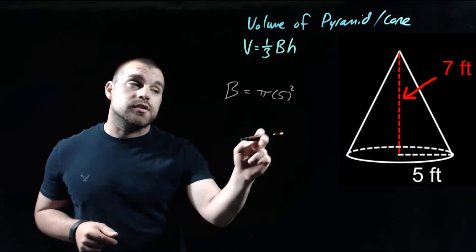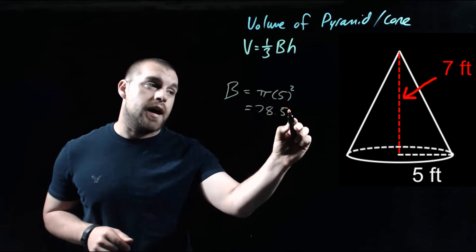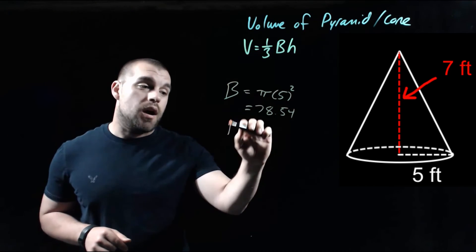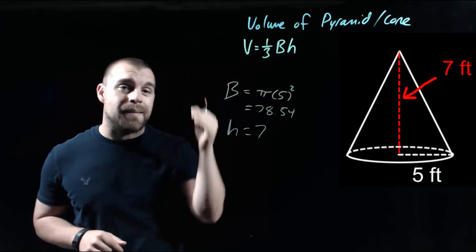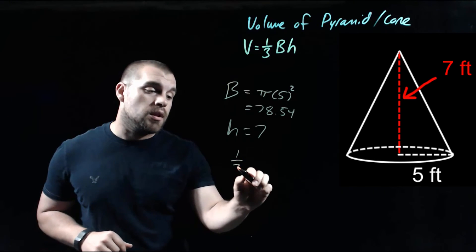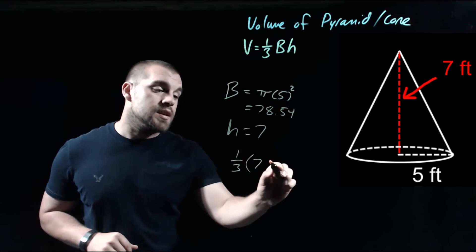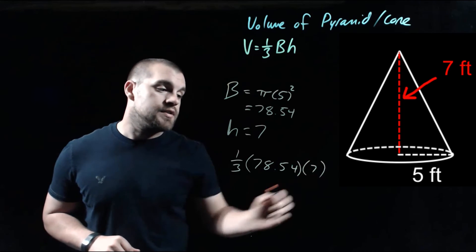Five squared is 25, and then 25 times pi is about 78.54. And then our height we mentioned was going to be that seven foot length running up and down from the apex perpendicular to the base. So now if we plug these into our formula, we've got one third times the area of that base times our height of seven.